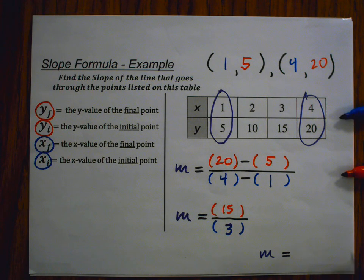m equals 15 over 3, which reduces to 5. m equals 5.